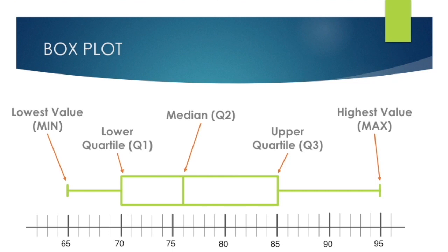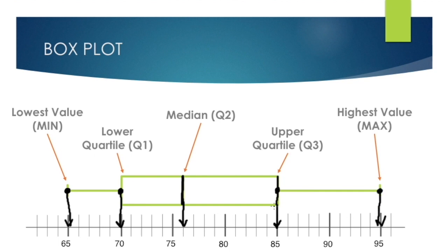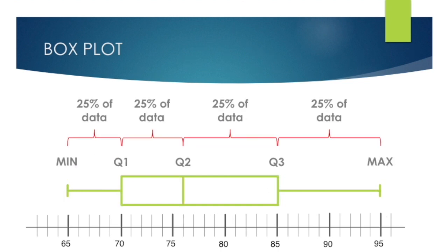Here's an example of a box plot, also referred to as a box-and-whisker plot. It has five numbers: the lowest value, which in this case is 65; the lower quartile, which is 70; the median, represented by the bar inside the box, which is 76; the upper quartile at the right edge of the box, which is 85; and the highest value, which is 95. These five numbers are connected through the box and the whiskers, making up the five-number summary.